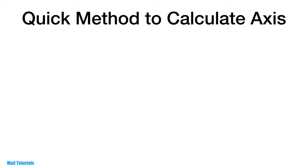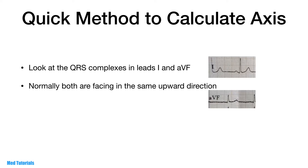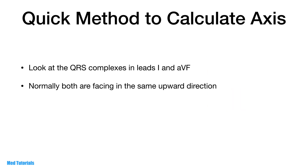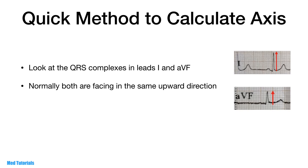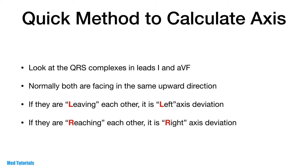In practice, when we look at ECGs we sometimes deploy a quick method to calculate the axis. It's not entirely foolproof and you may miss extreme or indeterminate axis at times, but it is really quick and easy to remember. Look at the QRS complex in leads 1 and AVF. If the axis is normal, the QRS in both leads will be predominantly positive. If the QRS complexes appear to be leaving each other — lead 1 predominantly positive with a tall R wave and lead AVF predominantly negative with a deep S wave — it is indicative of left axis deviation. Leaving each other equals left axis deviation.